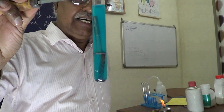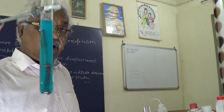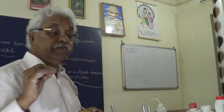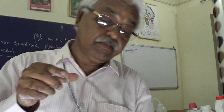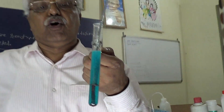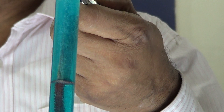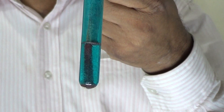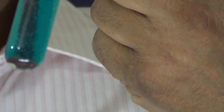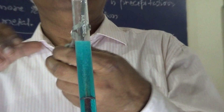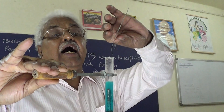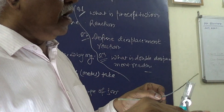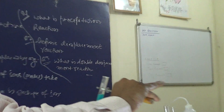Now we will show you one example with magnesium. This is a more reactive metal. The more reactive metal will absorb — magnesium will replace copper. Magnesium displaces copper, and you can observe the copper deposition.